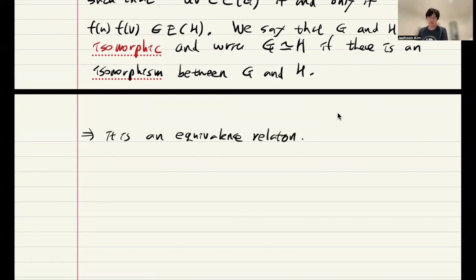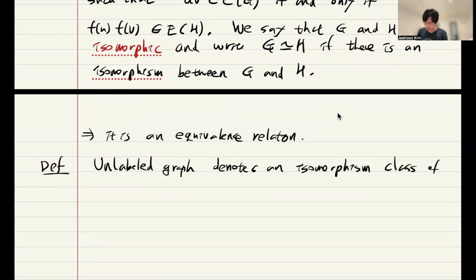So it partitions all the graphs into isomorphism classes. So, we call this as unlabeled graph.